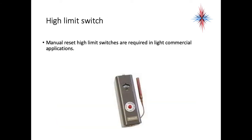High-limit switches with manual reset are required in light commercial applications. If the boiler temperature gets too high, it needs to cut off and require a manual reset. We have high-limits that are part of the aquastats as operating controls, but if that high-limit fails, many light commercial applications require a second manual-reset high-limit.